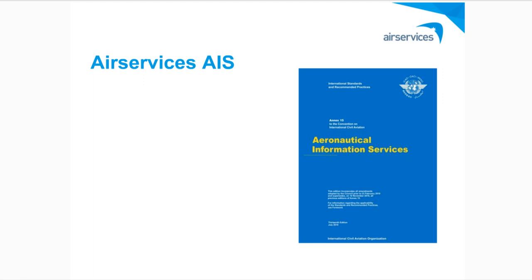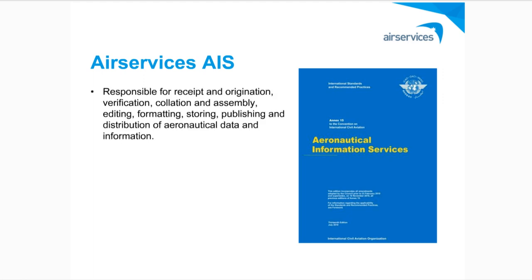Every country around the world provides an aeronautical information service in one form or another, and like most things in this industry, there is the official document that outlines what the service is and how it is delivered. That document is ICAO Annex 15. Air Services get given data. We check it for gross errors, completeness, accuracy, and format. Then we store it, pretty it up, and package it, and then push it out as products at regular intervals for industry to use in any number of aviation-related activities.